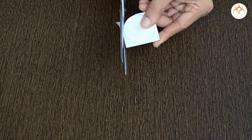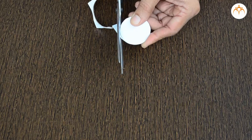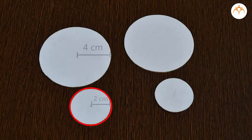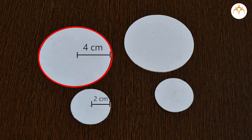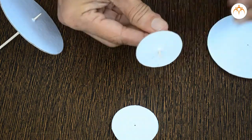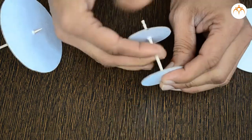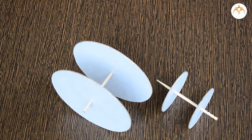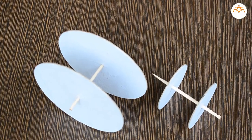Let us take this card sheet and cut circles with scissors. This circle has a radius of two centimeters, while this one has a radius of four centimeters. We will put a toothpick in and fix it in place. This is our wheel made using a card sheet.